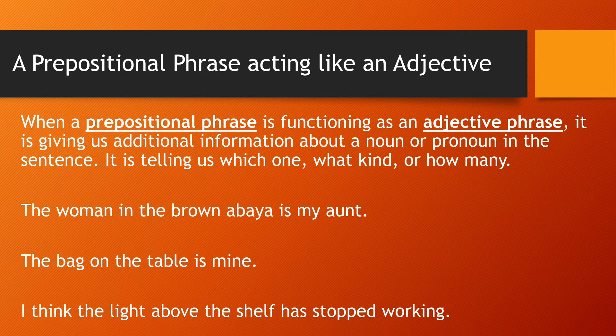Let's look at some examples. The woman in the brown abaya is my aunt. Which woman? The one in the brown abaya. So 'in the brown abaya' tells us more about the woman — it is a prepositional phrase. The bag on the table is mine. Which bag? The one on the table. So 'on the table' is a prepositional phrase giving us more information about the bag, and 'in the brown abaya' gives more information about the noun woman.